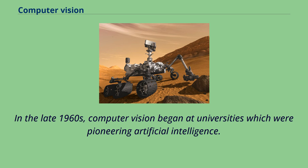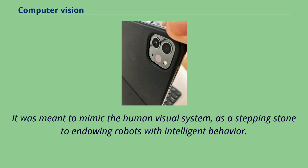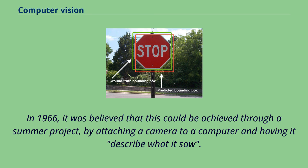In the late 1960s, computer vision began at universities which were pioneering artificial intelligence. It was meant to mimic the human visual system, as a stepping stone to endowing robots with intelligent behavior. In 1966, it was believed that this could be achieved through a summer project, by attaching a camera to a computer and having it describe what it saw.